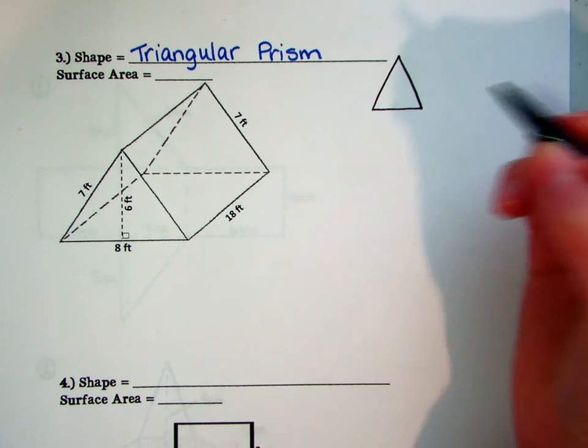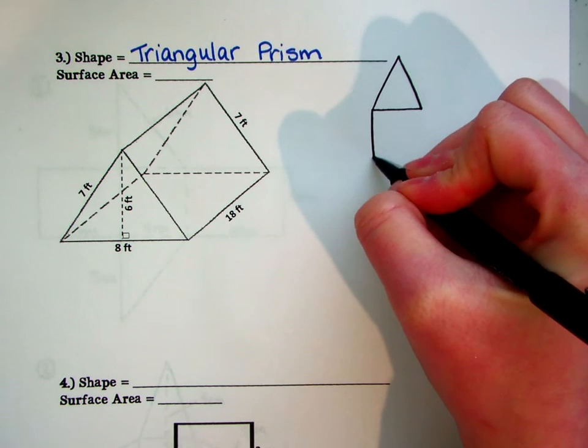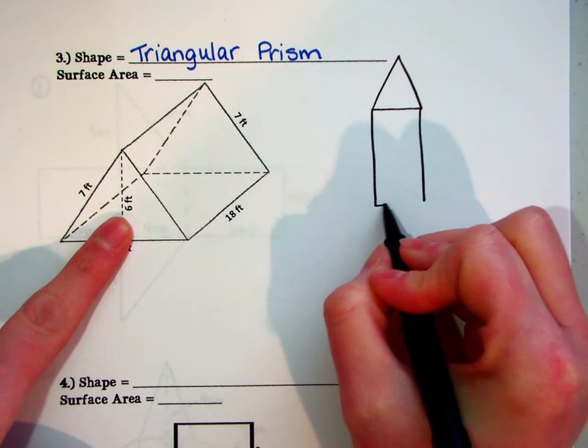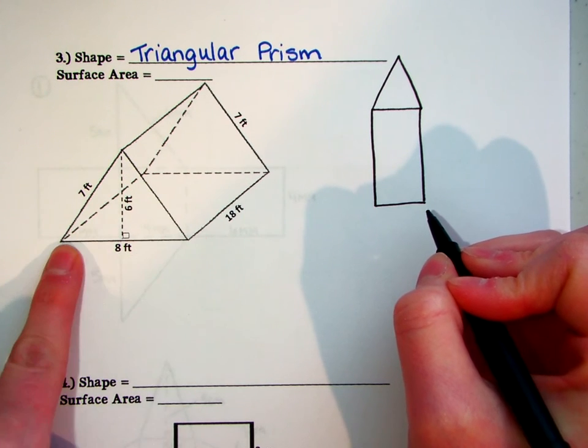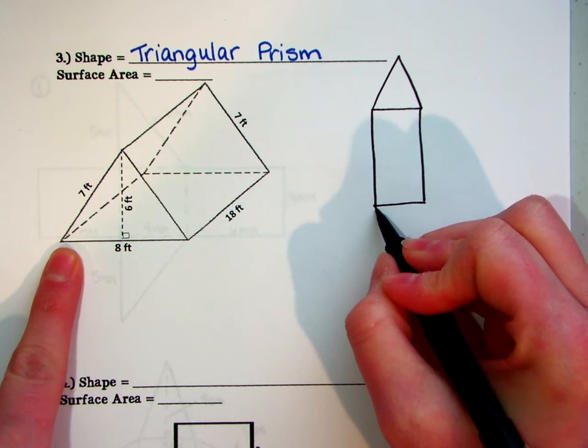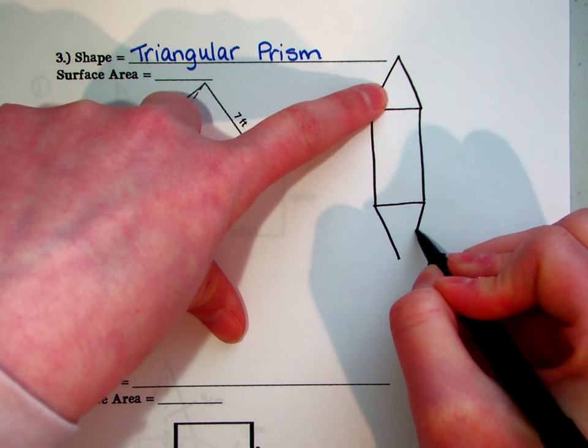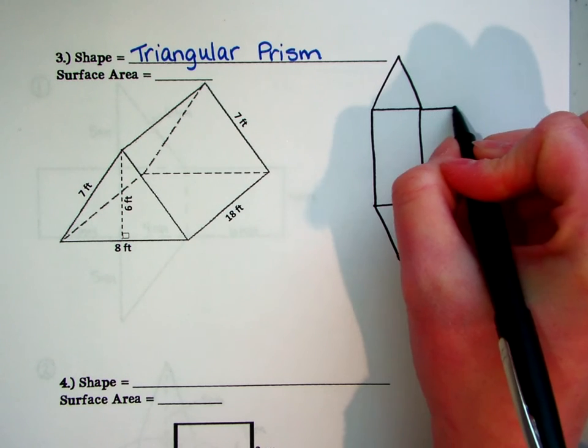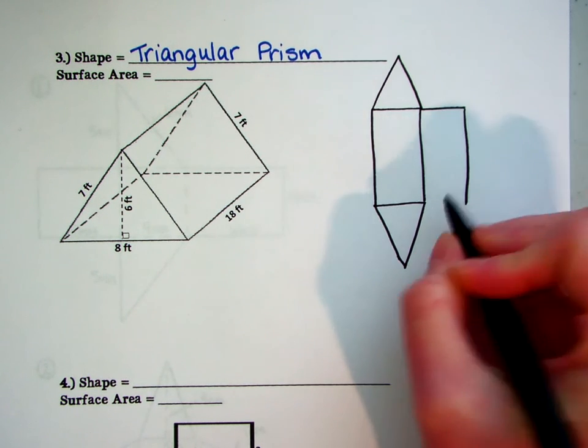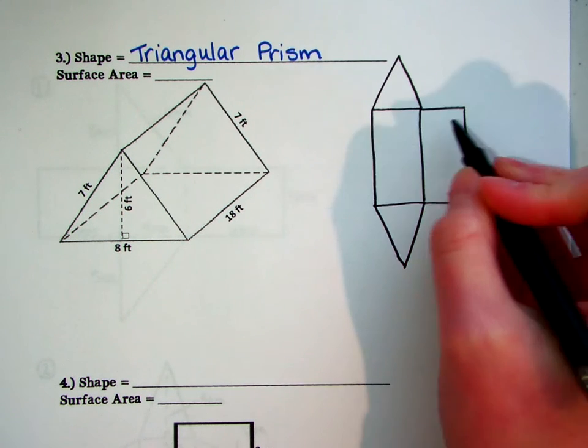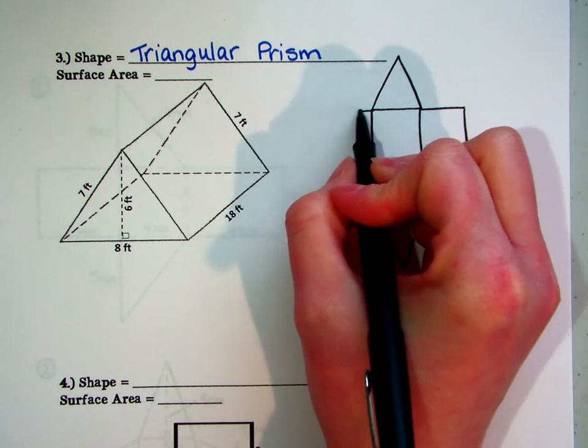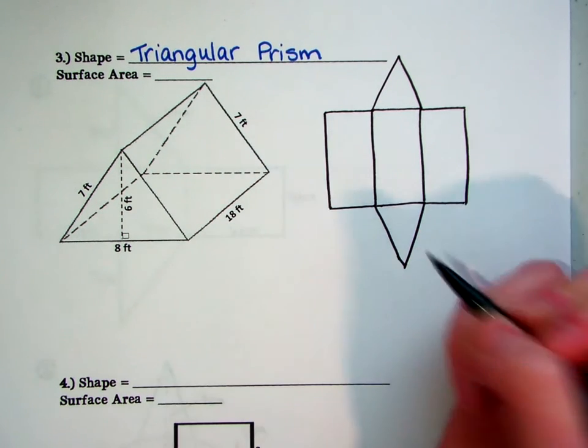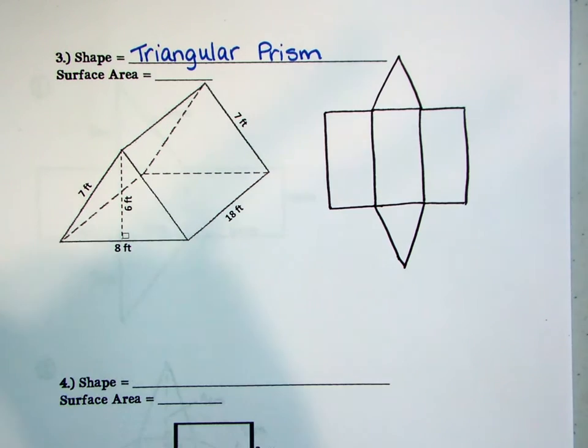Now, as you know, it does not have to be perfect. Right underneath that, I'm going to draw a rectangle, which would be this bottom right here. Then underneath that, I'm just going to draw another triangle. Not perfect. They don't let me teach art, you guys. Then out to the side of my middle rectangle, I'm going to draw another one. And I'm going to do the same thing on the left side.